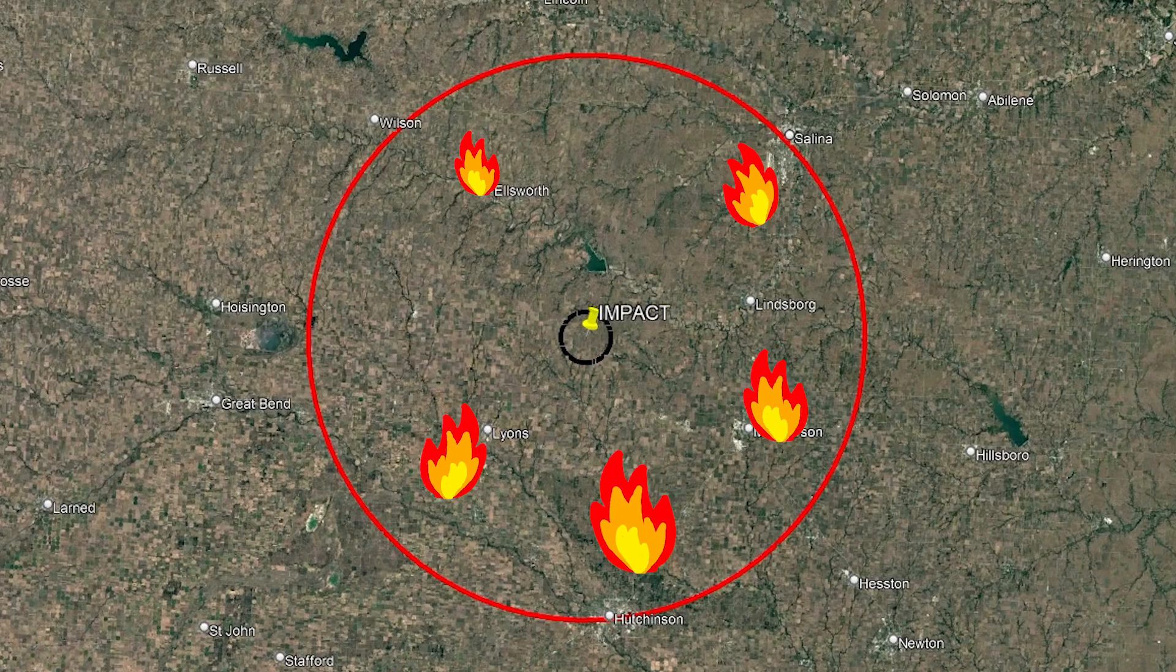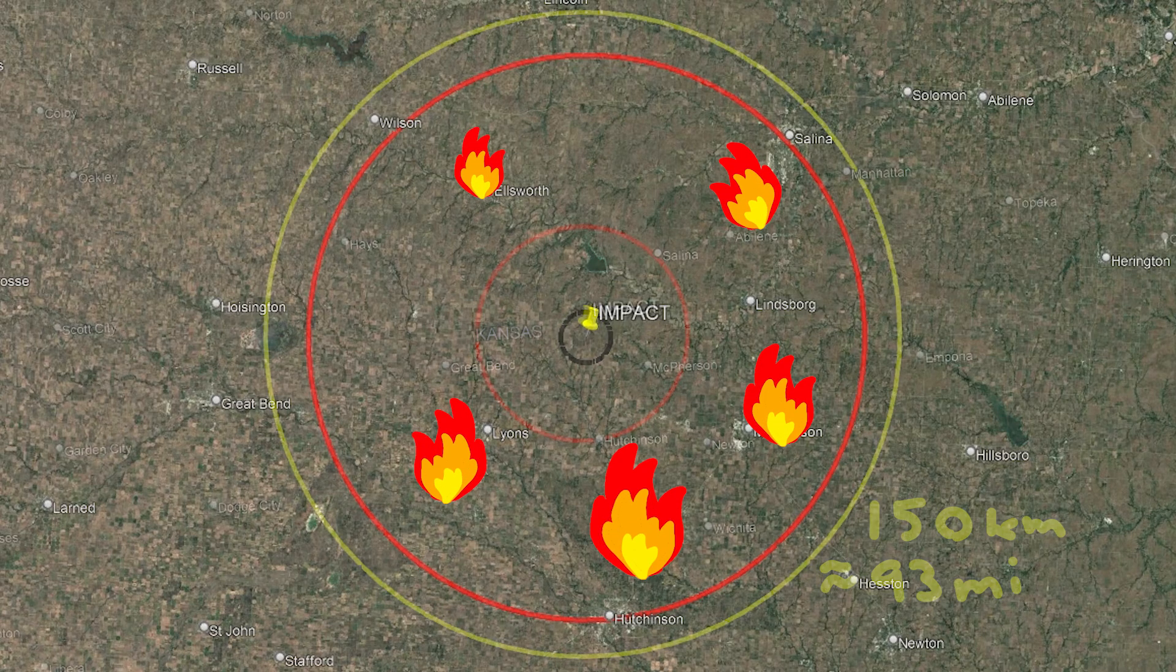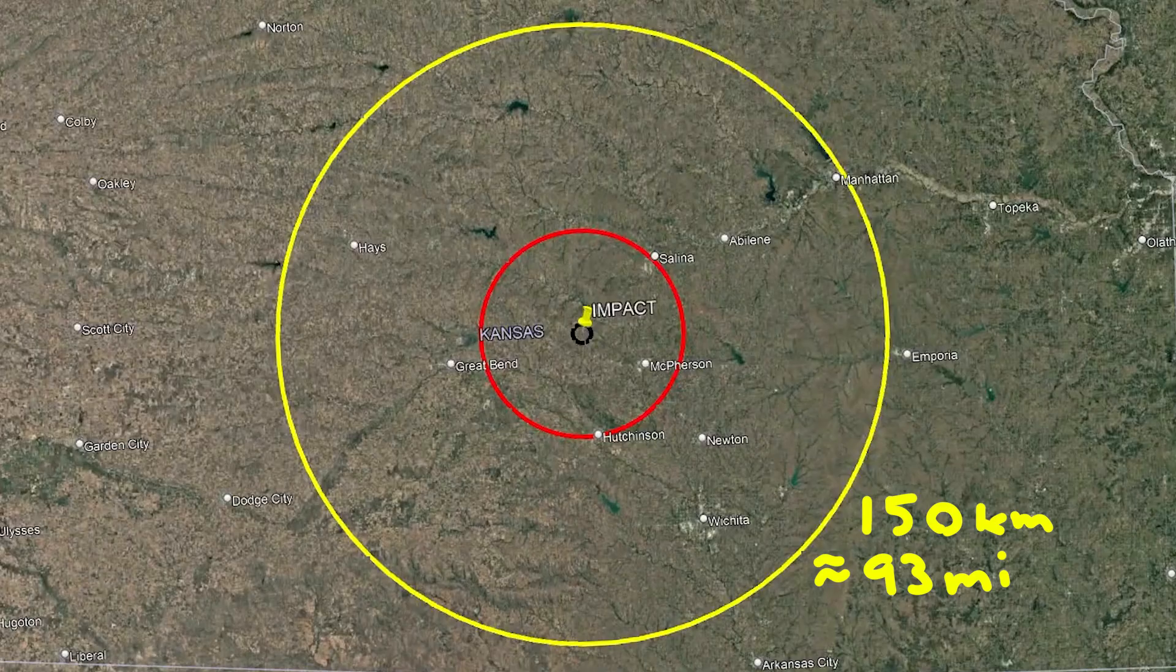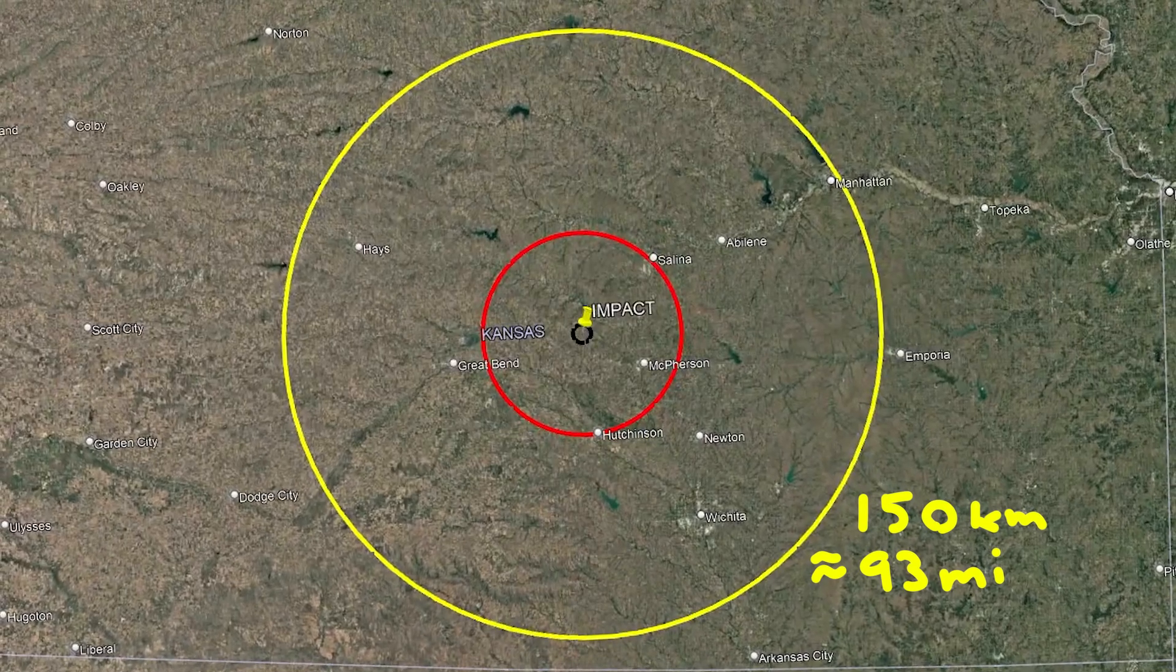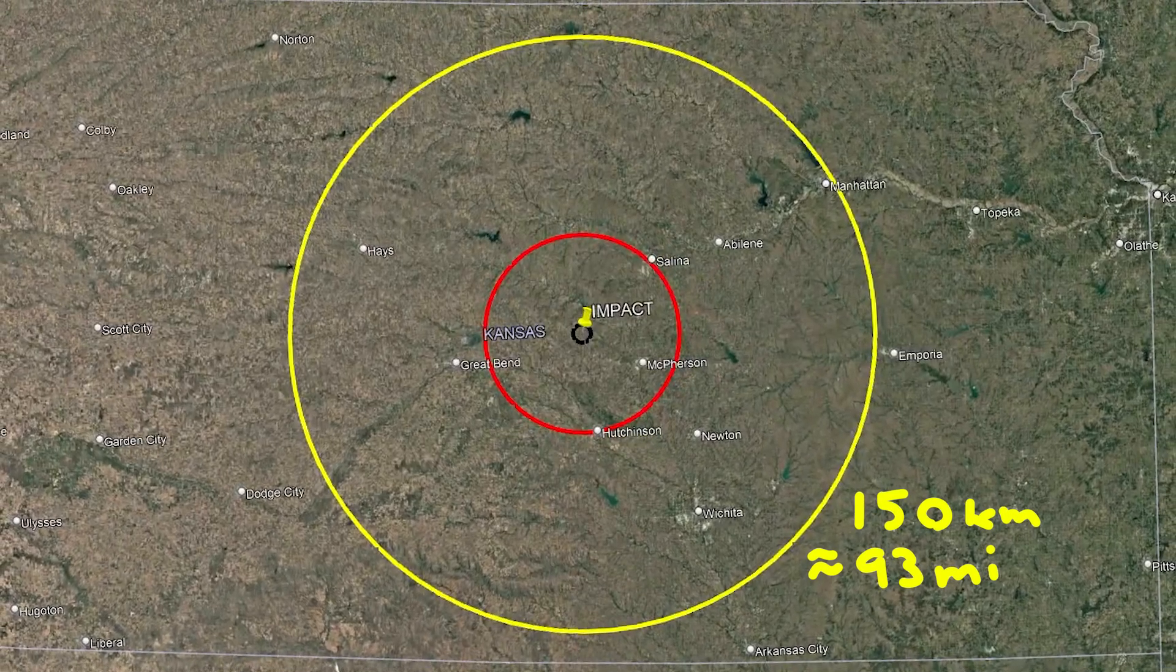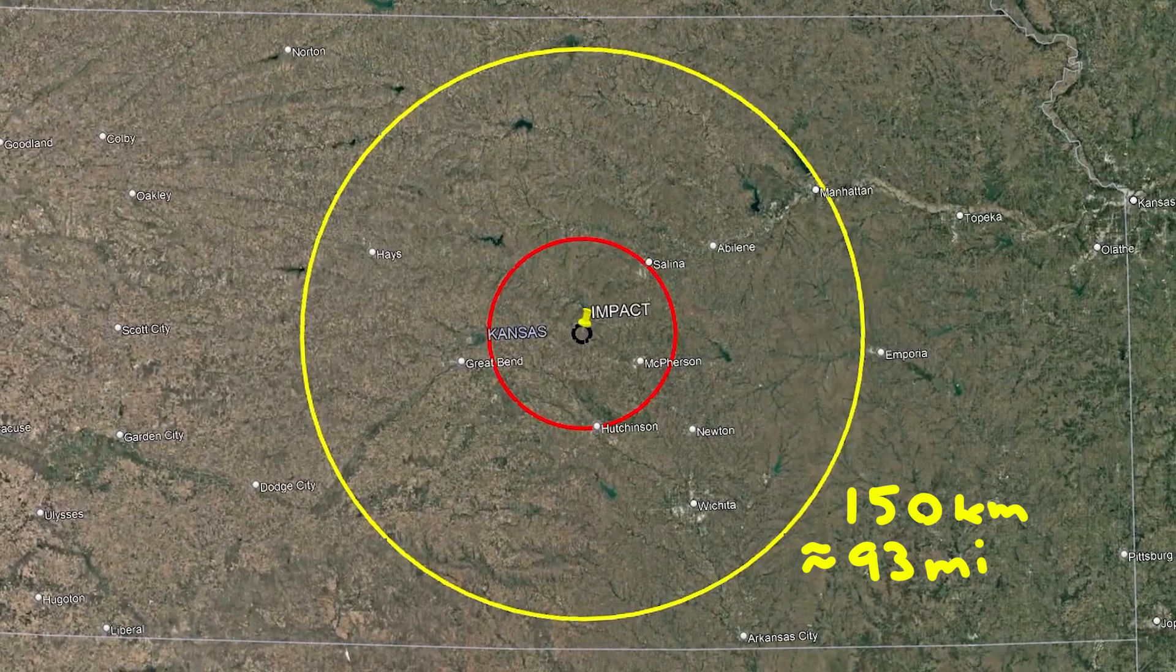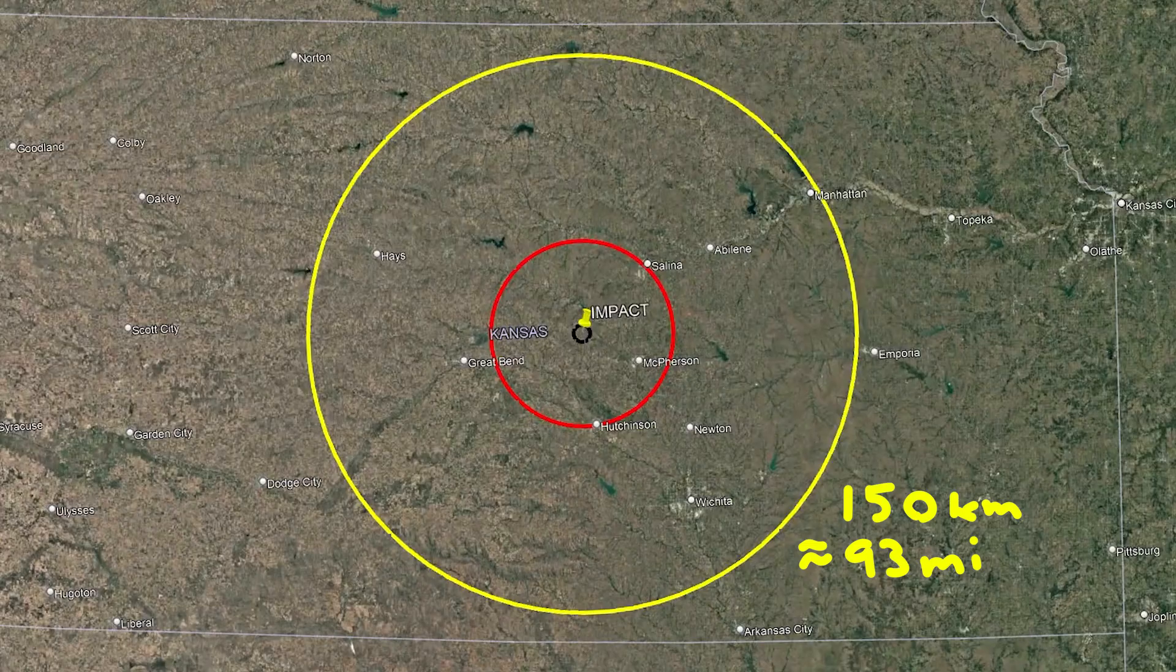1% survival rate, if you're in an underground bunker. Between 50 and 150 kilometers radius of impact, your survival rate increases drastically. Now, the fireball is only 10 times larger than the sun, and while most of your body suffers first-degree burns, you might be able to survive, even without an underground bunker.